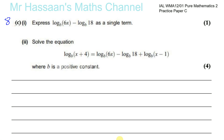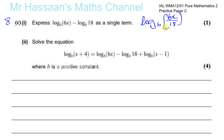Okay, question 8 part c from this practice paper, Pure Maths 2 International A Level. The first part says express log to the base b of 6x minus log to the base b of 18 as a single term. You just combine them by division, so you get log to the base b of 6x over 18, which simplifies to log to the base b of x over 3.